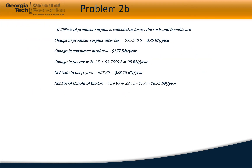Now, how does the net benefit change if the government collects 20% of producer surplus as taxes and the marginal excess tax burden is 25%? In this scenario, the change in producer surplus is 75 billion dollars per year while the consumer surplus remains constant. The tax revenue increases to 95 billion dollars per year. The net gain to taxpayers is 23.75 billion per year, and the net benefit to the project is now 16.75 billion dollars per year.